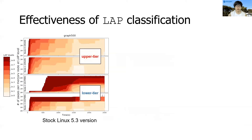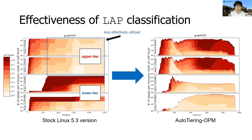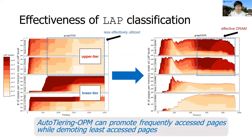Next, I'm going to explain how well our least accessed page classification works. This graph shows the page distribution with estimated access frequency in the baseline Linux. Darker color refers to pages that are accessed relatively more frequently. As you can see, the upper-tier memory is less effectively used because many infrequently accessed pages reside there. On the other hand, with auto-tiering OPM, we can promote frequently accessed pages to the upper-tier memory by opportunistically demoting the less frequently accessed pages. It shows that the upper-tier DRAM contains frequently accessed pages, while demoting the rest to the lower-tier memory.